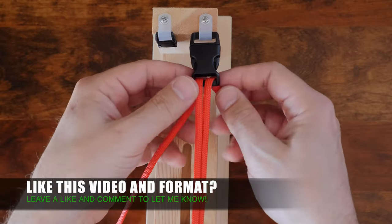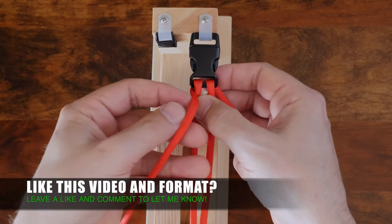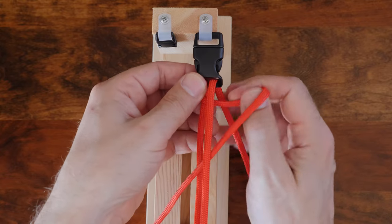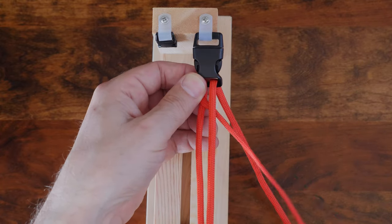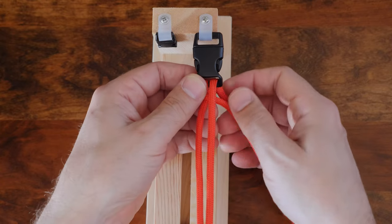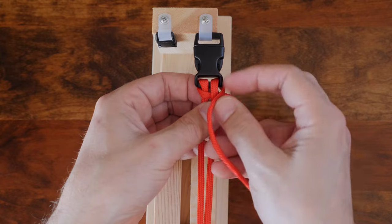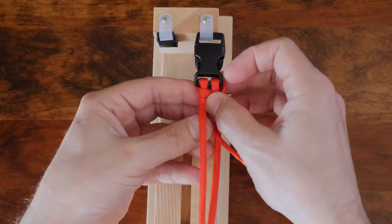We're going to start on the left and pass our left strand over our left center cord and then under our right center cord as shown. Then we'll pass our right strand over our right center cord and then under our left center cord.